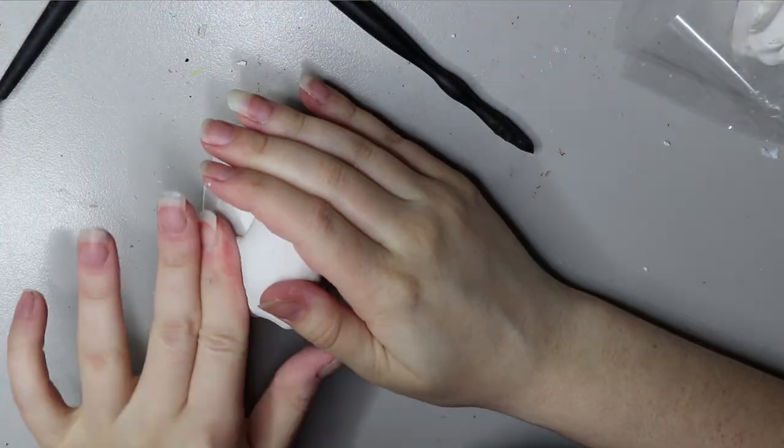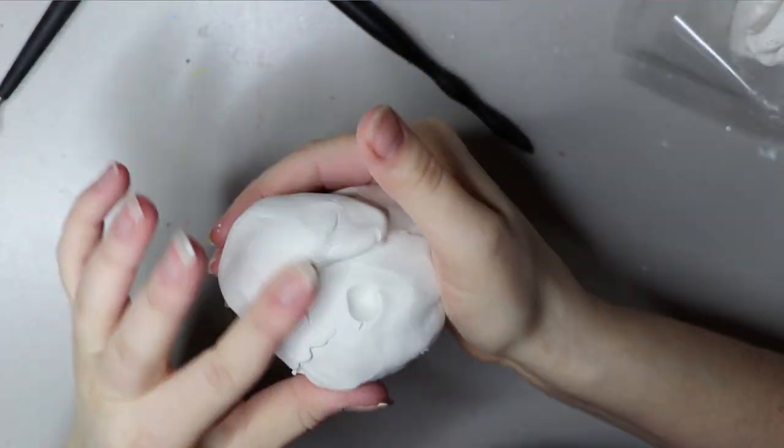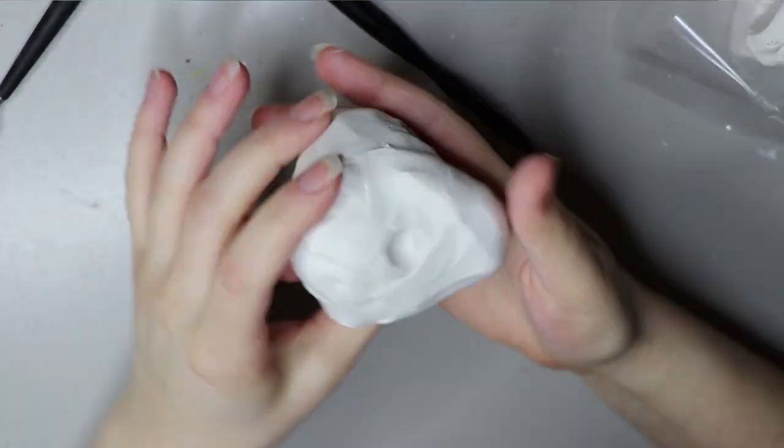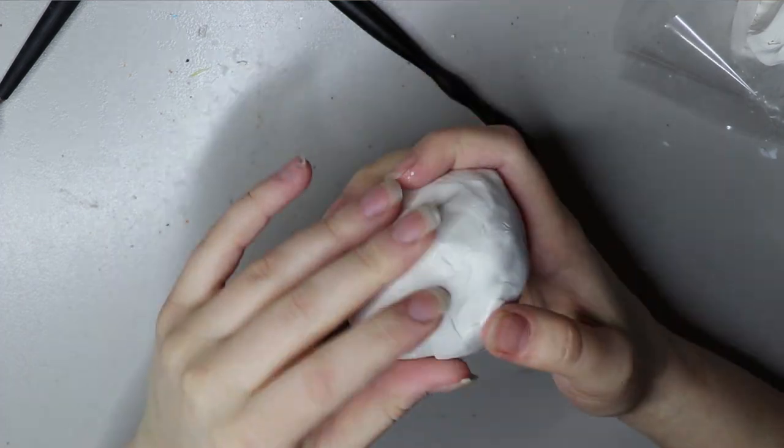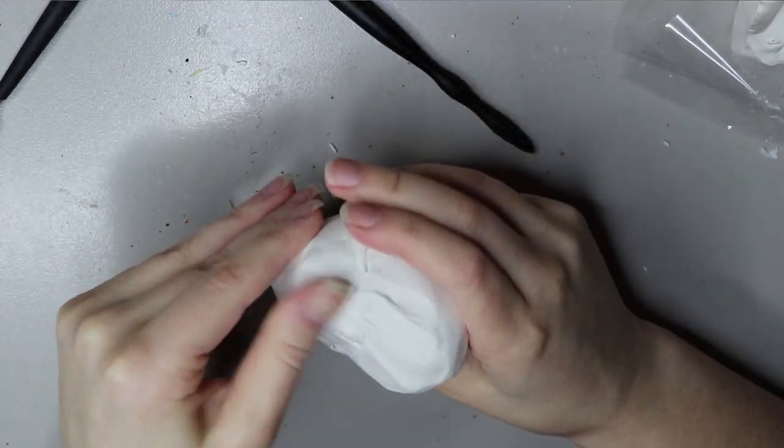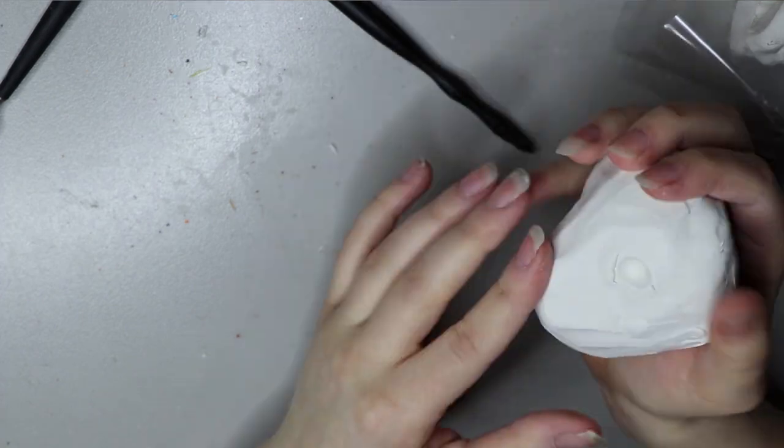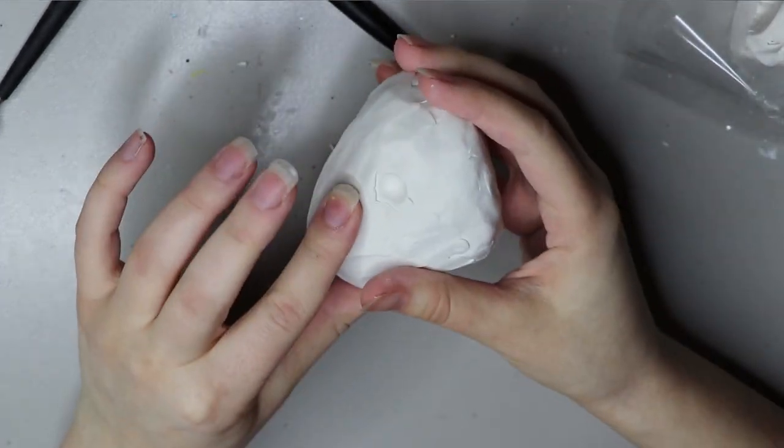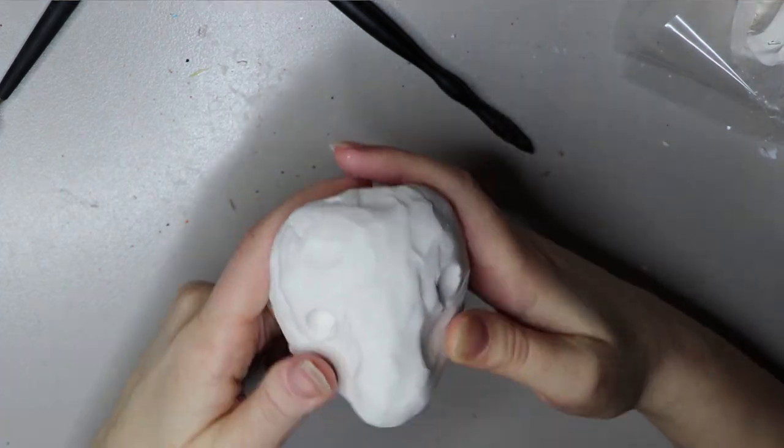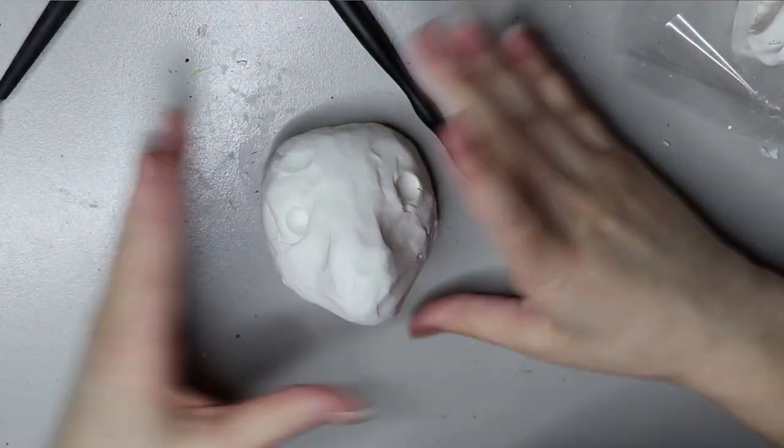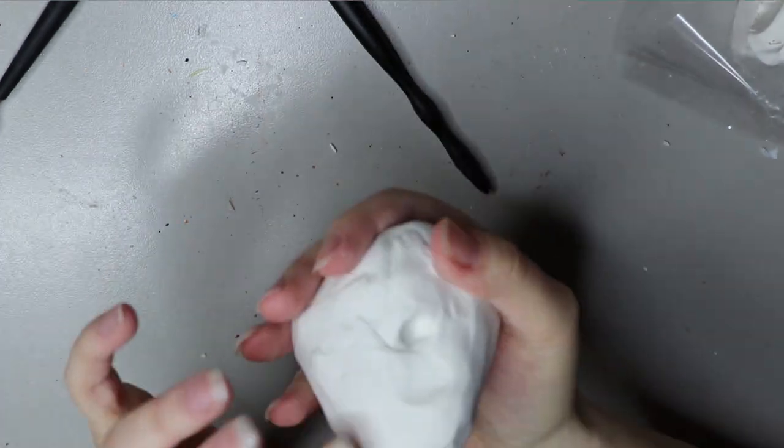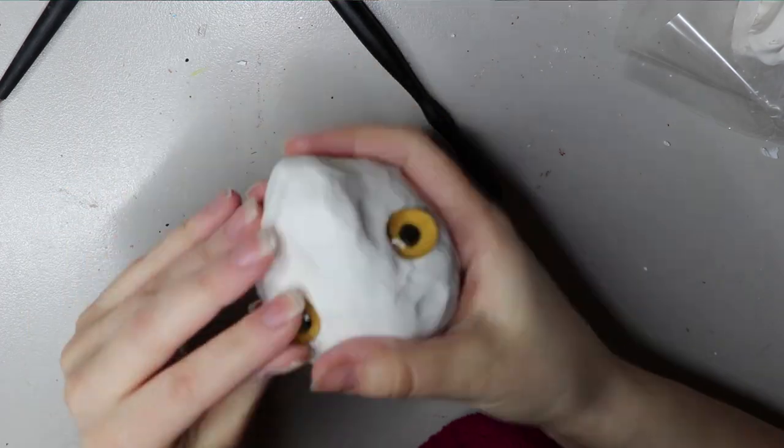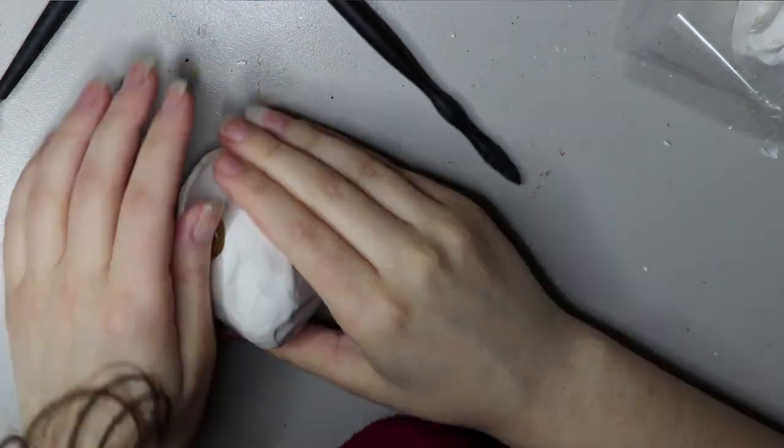This is the base of the head and I'm just roughing in where the eyes are going to go. Then I'll be adding some more clay to the snout area. There's quite a bit of fiddling around to get the dimensions and the shape of the head right, otherwise it looks a bit lopsided. I'm adding the eyes in right now and then I'm going to sculpt around it, so it just gives it a bit more of a shape.